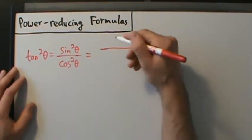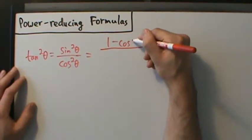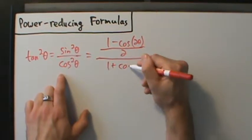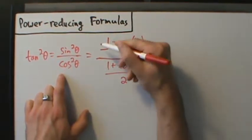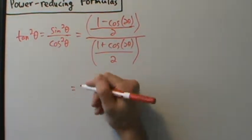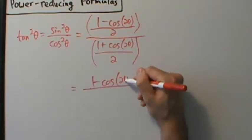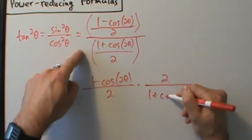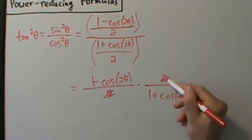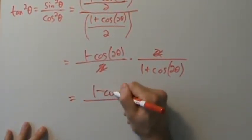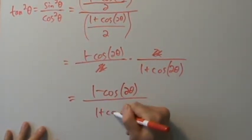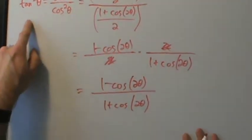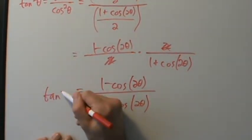If we take the power-reducing formulas for sine squared and cosine squared and divide them, that gives us the power-reducing formula for tangent squared. Sine squared is one minus cosine of two theta, all divided by two. Cosine squared is one plus cosine of two theta, all divided by two. Dividing these fractions means multiplying by the reciprocal — two over one plus cosine of two theta. The two's cancel, leaving tangent squared of theta equals one minus cosine of two theta over one plus cosine of two theta.